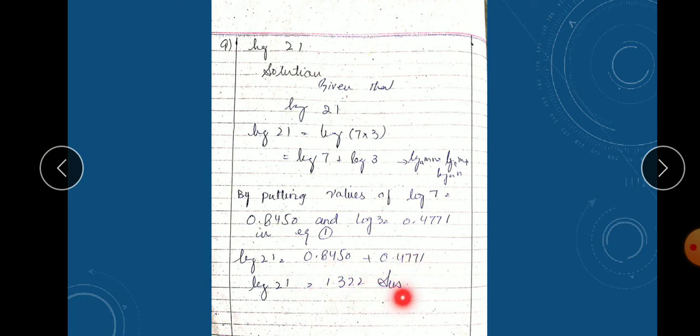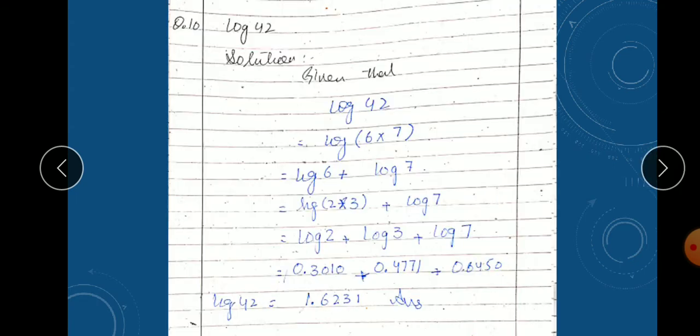Question ten: log42. What is the factor of 42? Six into seven. Log6 plus log7. Seven has no factor, but six has factors. We don't have log6 value given, so we convert it again. Two times three is six: log2 plus log3 plus log7. Log2 is 0.3010, log3 is 0.4771, log7 is 0.8450. We have 1.6231.